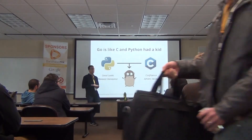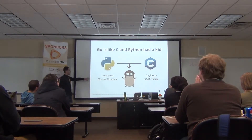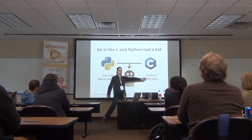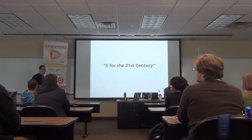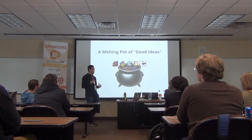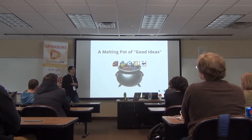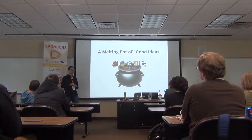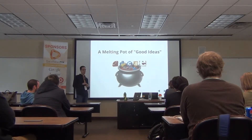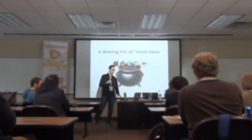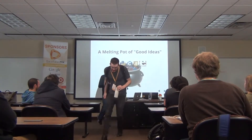Getting directly into Go: Go is often described like C and Python having a kid — it inherited the good looks and pleasant demeanor of Python with the confidence and athletic ability of C. Another common description is 'C for the 21st century,' although the people who created Go don't really like that. Another one is that it's a melting pot for good ideas — it's taken a lot of what people have liked and found useful from a number of different languages and synthesized those into a new language. Go is a very new language and it's exciting because they were able to start from basically scratch.